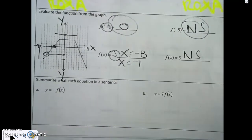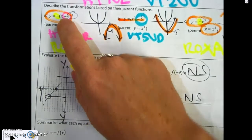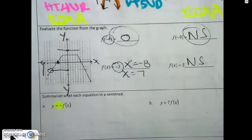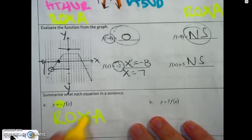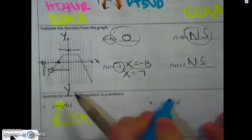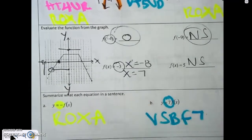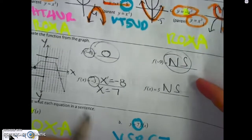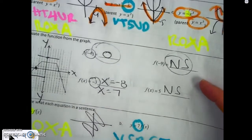There are more reflections and transformations here, just presented in a different way. The equation is written in f of x form. With the negative, it's with the y, which really means it's with the x-axis. The coefficient 7 represents a vertical stretch by a factor of 7. You wouldn't be asked to graph it since you don't know the shape.